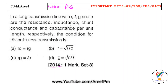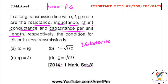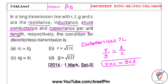The first question I'm choosing is from Gate 2014, set 3, one-mark question. In a long transmission line with R, L, G, and C as resistance, inductance, shunt conductance, and capacitance per unit length respectively, the condition for distortionless transmission line is that the ratio of resistance to conductance should equal the ratio of inductance to capacitance. That is, R×C = G×L. So answer A is the right option.